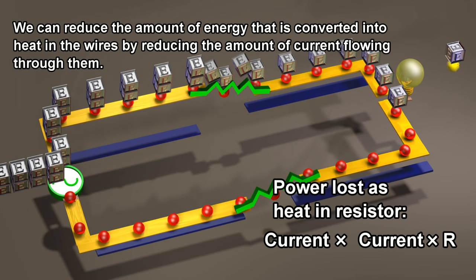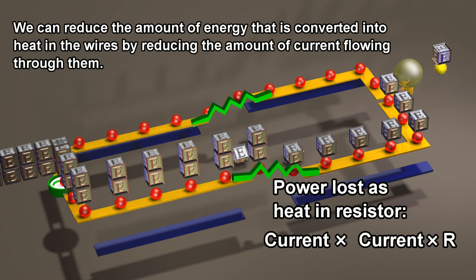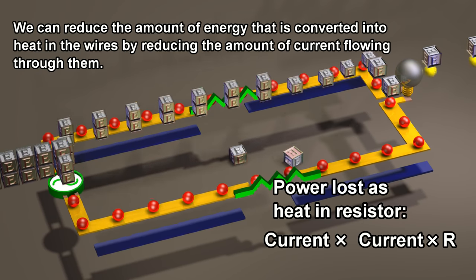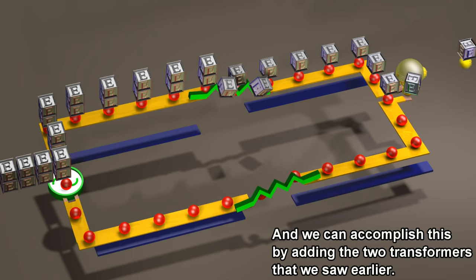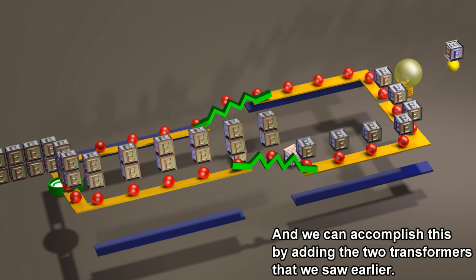We can reduce the amount of energy that is converted into heat in the wires by reducing the amount of current flowing through them. And we can accomplish this by adding the two transformers that we saw earlier.